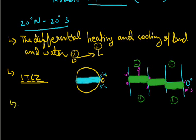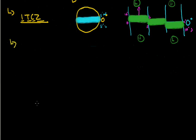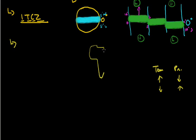As we know, there is an opposite relationship between temperature and pressure — if temperature is high then pressure is low, and if pressure is low then temperature is high. If you see here in the African continent, here is the Madagascar region, while this is India and Southeast Asia.